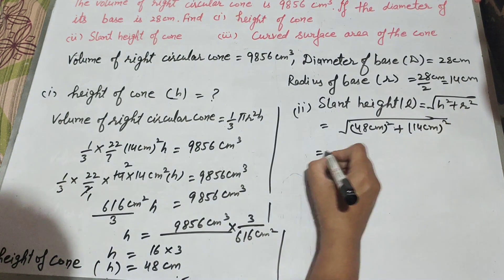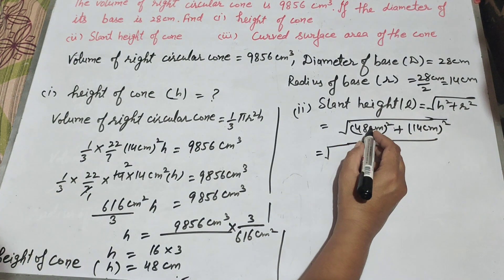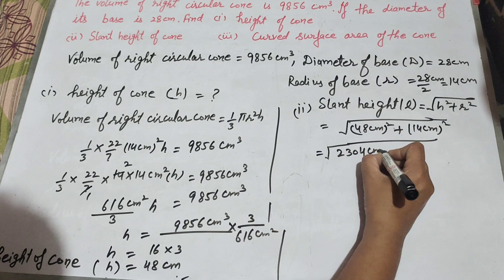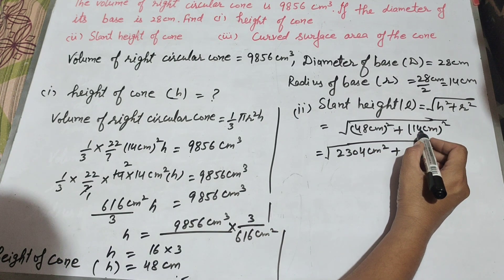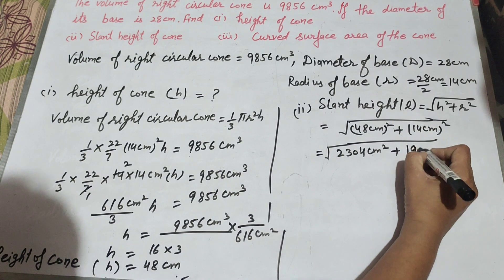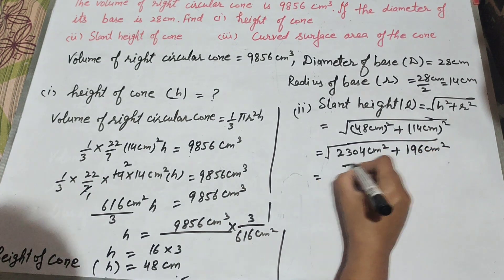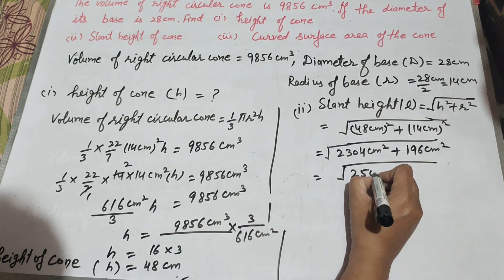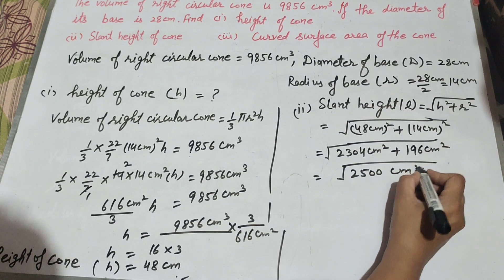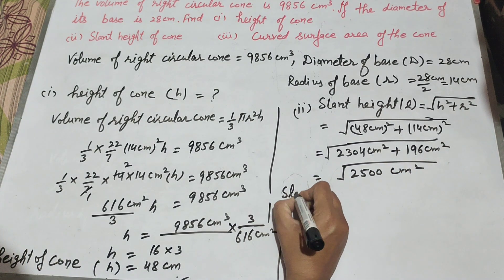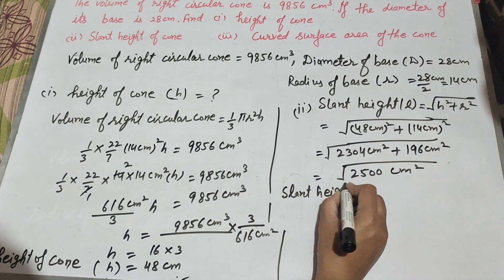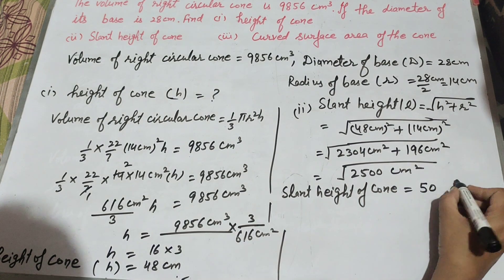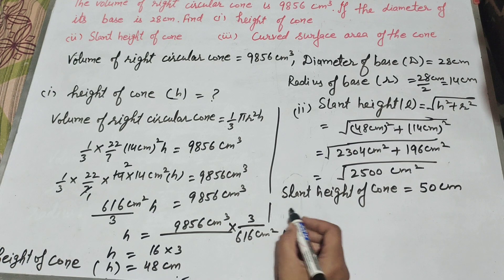So slant height equals square root of 48 squared plus 14 squared, which is square root of 2304 plus 196, equal to square root of 2500. Slant height of cone is equal to 50 centimeter.